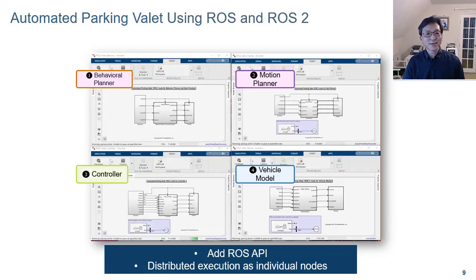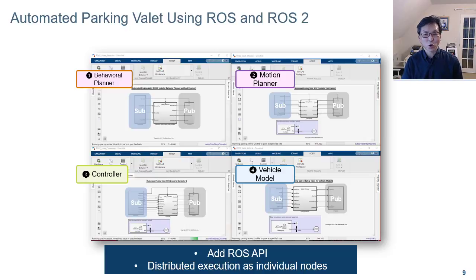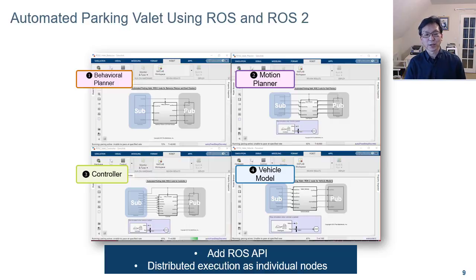The single parking valet model can now be broken out into four separate models to facilitate deployment as a distributed system. Simulink signal lines between the various models are replaced by ROS publish and subscriber blocks. The motion planner, for example, calculates and sends the desired trajectory to the controller over the ROS network.